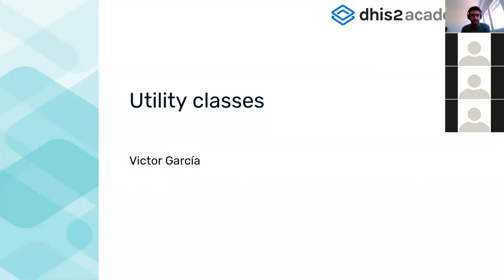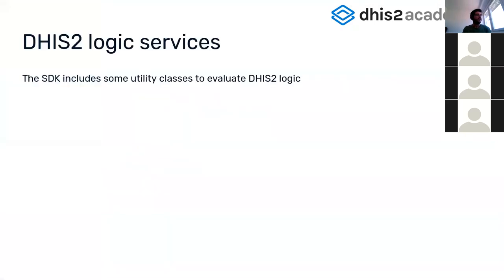Let's continue with the next session, which is also about utility classes and services — some helpers around the development of the Android application. These are services, helpers, or engines, like the rule engine, that sit around the SDK and help with logic related to DHIS2.